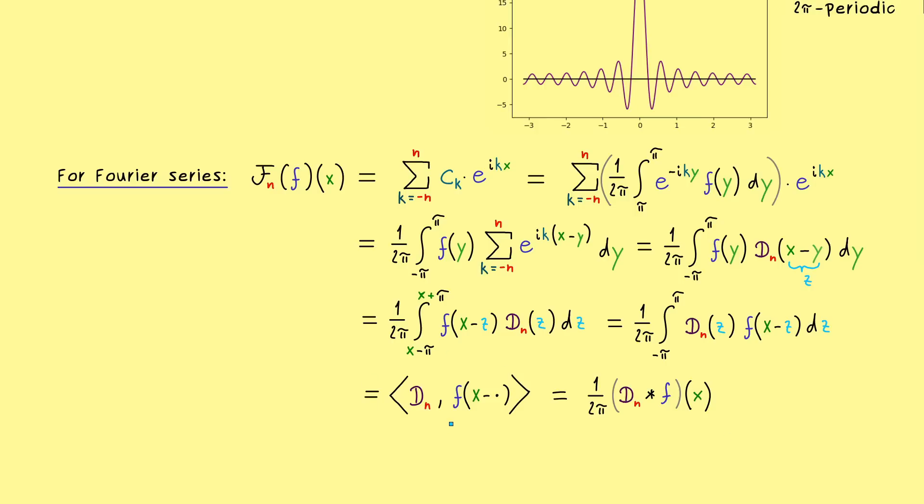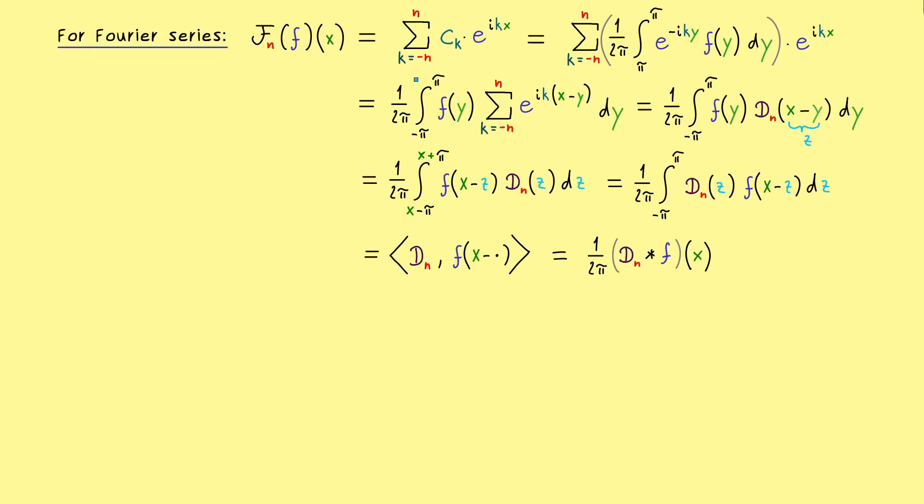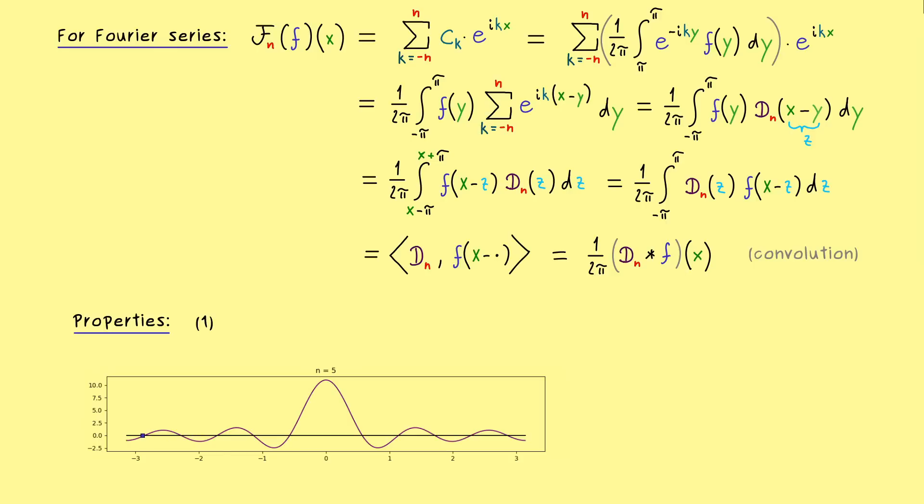So you see, we have two nice formulations for the Fourier series which use the Dirichlet kernel. Both things are quite helpful if we want to write down proofs concerning the Fourier series of f. But before we do these applications, let's first look at some nice properties of our Dirichlet kernel. And the first thing we could do is to count the zeros this Dirichlet kernel has as a continuous function. And obviously, the zeros are exactly given by the numerator in the sine representation.